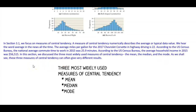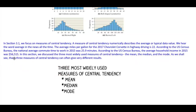We hear the word average in the news all the time. For example, the average miles per gallon for the 2017 Chevrolet Corvette in highway driving is 22. According to the US Census Bureau, the national average commute time to work in 2015 was 25.9 minutes, and the average household income in 2015 was $56,515. In this section, we discuss the three most widely used measures of central tendency: the mean, the median, and the mode. These three measures can often give very different results.